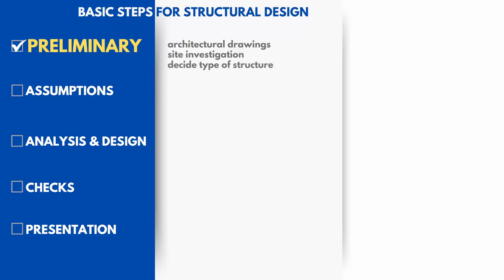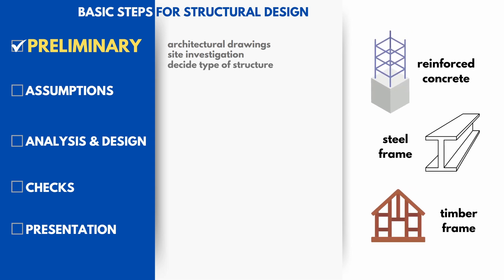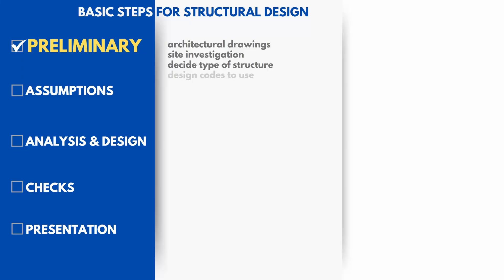We then need to decide on the type of structure — for example reinforced concrete, steel frame, or timber frame. The decision depends on many factors like the design itself, cost implications, local restrictions, and even the owner's instructions. Based on the type of structure and location, we also need to define the design codes that will be used.